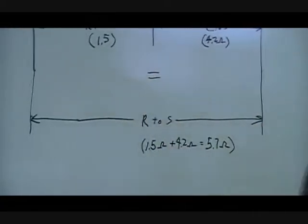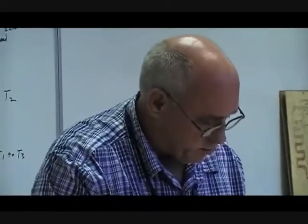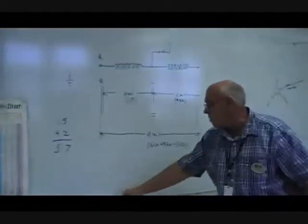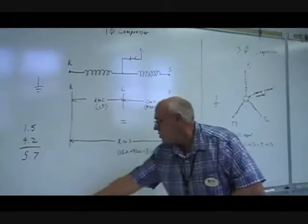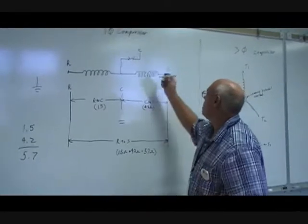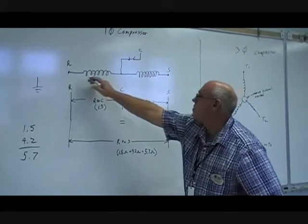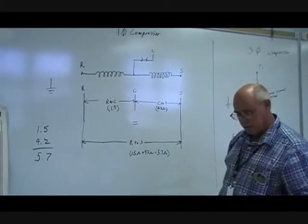There's many different failures that can happen between that. Some that I want to just quickly explain. If I had an open start winding, for example, I would not have the continuity between the C and the S, nor would I have it between the R and the S in that particular case.